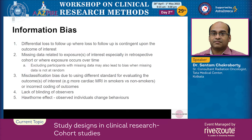Information bias arises when differential loss of follow-up is contingent upon the outcome of interest. There may be missing data related to exposure, particularly in retrospective cohort studies, because records may not be complete. While it may be tempting to exclude participants with missing data, the missingness is often not random — something has happened to cause it, possibly tied to the exposure of interest. Therefore, eliminating missing data is not really a solution when designing retrospective cohort studies.